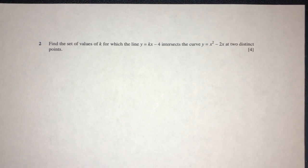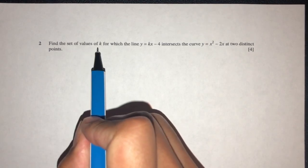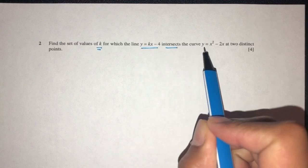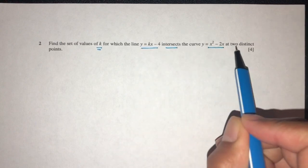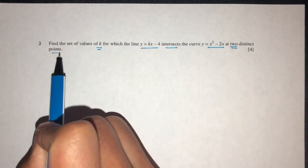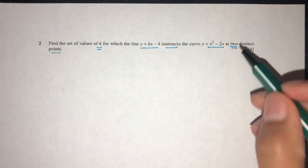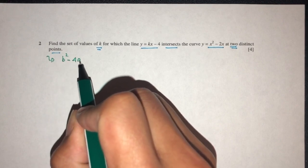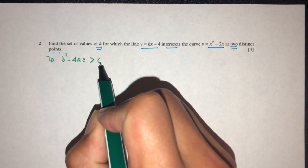Let's move on to the next question. Here we have to find a set of values of k for which the line y = kx - 4 intersects the curve y = x² - 2x at two distinct points. Now whenever we have two distinct points, we realize we have to use b² - 4ac has to be more than zero.